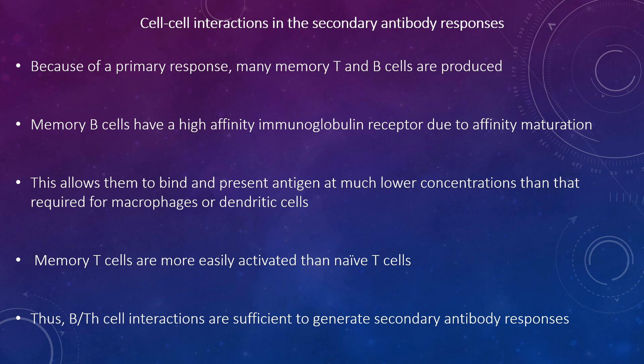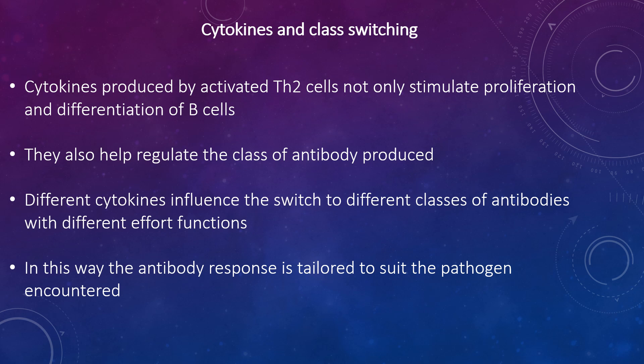Therefore, B cell and Th cell interactions are sufficient to generate adequate antibody responses. It is not necessary, although it can happen, to prime memory T cells with antigen presented by dendritic cells and macrophages. The antibodies produced by activated T cells not only stimulate proliferation and differentiation of B cells, they also help regulate the class of antibody produced. Different cytokines influence the switch to different classes of antibodies with different effector functions, so the antibody response is tailored to suit the pathogens encountered.